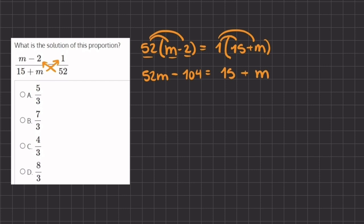Now we want to move all of our variables to one side and all of our numbers to the other, so we subtract m on both sides and add 104 to both sides. And now we have 51m equals 119.